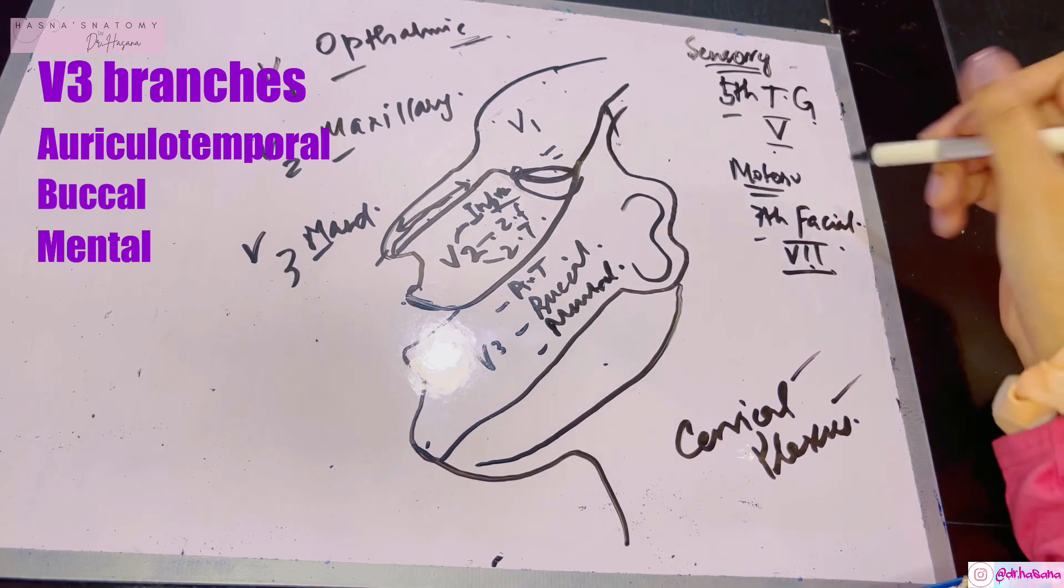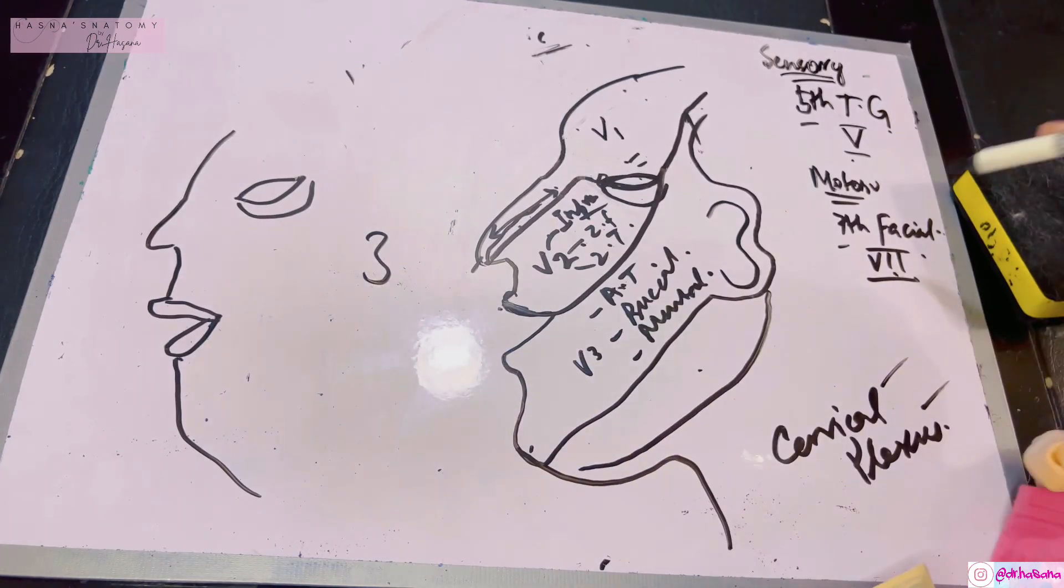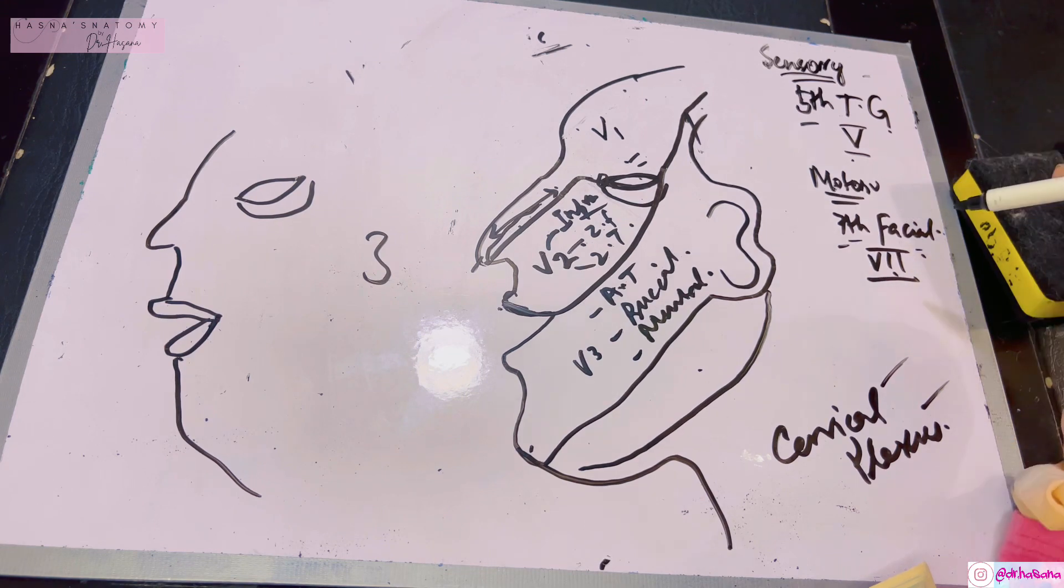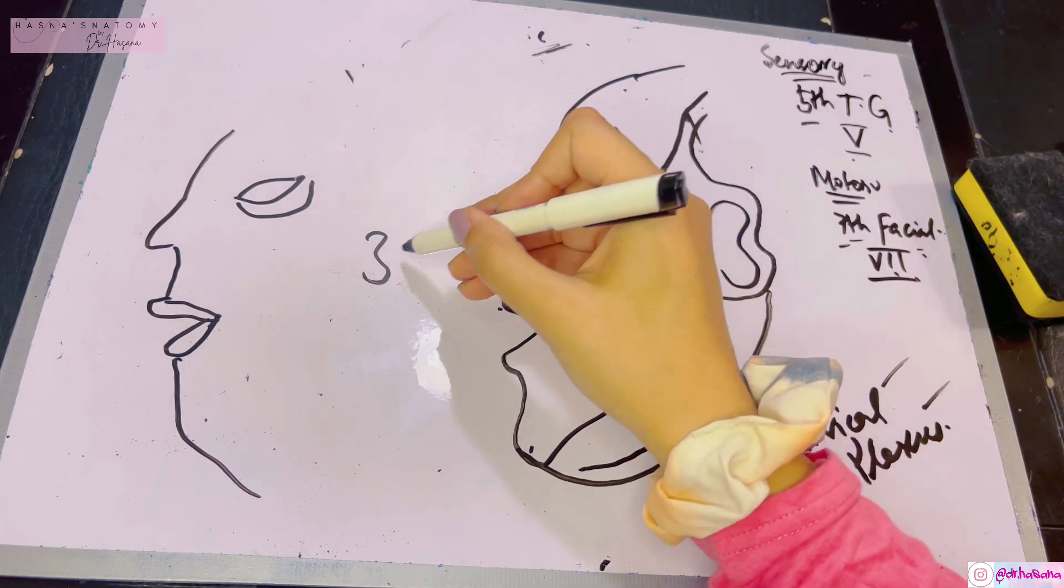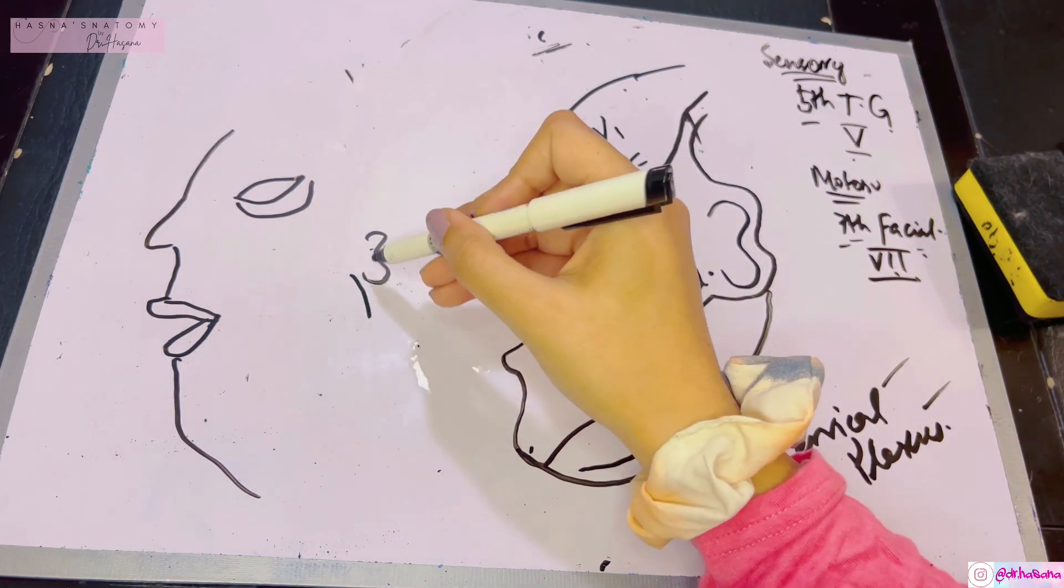Let's talk about the motor supply of your face. The facial nerve is the chief nerve supply of your facial muscles. When it leaves the stylomastoid foramen, which lies between the styloid process and mastoid, it gives a posterior auricular nerve.